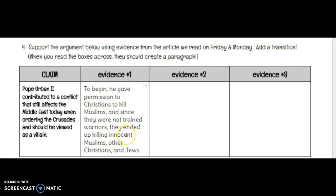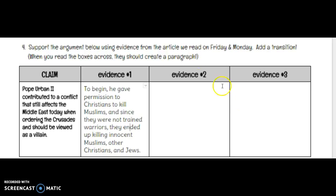This evidence ties back to the belief that he should be viewed as a villain because none of this would have happened had he not ordered the Crusades. You need to come up with two other really negative effects of what happened because of him ordering the Crusades, and you're going to write these in complete sentences for Evidence 2 and Evidence 3 with transitions at the beginning.